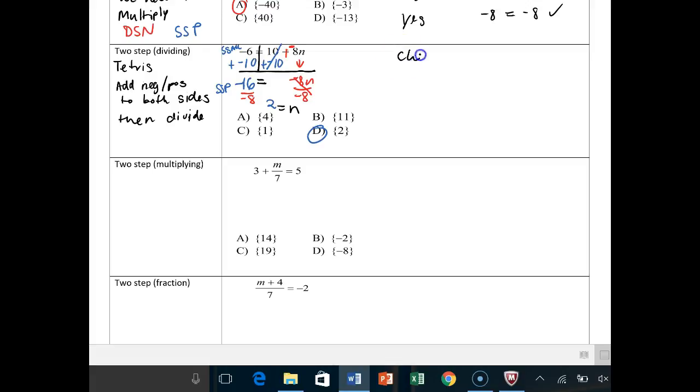Now to check, it's very simple again. You just write out the problem. Negative 6 is equal to 10 plus negative 8N. And then negative 6 is equal to 10 plus negative 8. And then plug in your answer. In this case, your answer was 2.